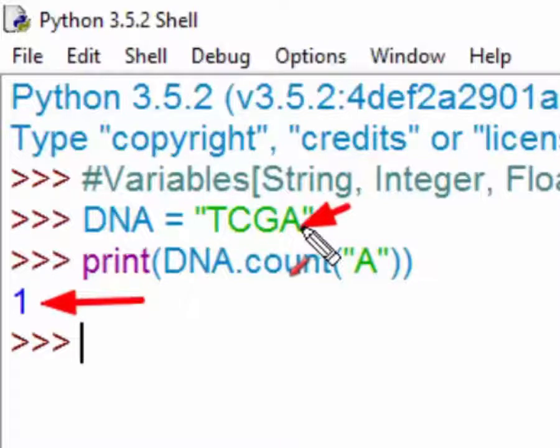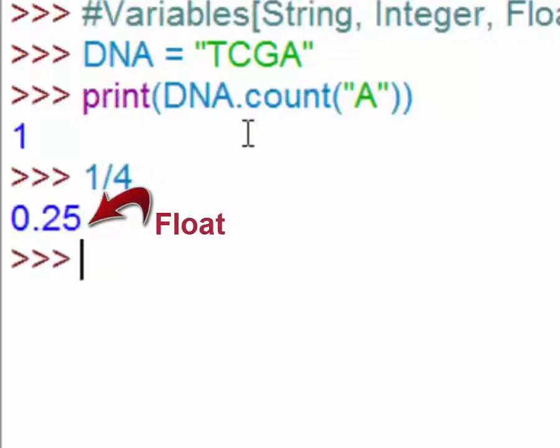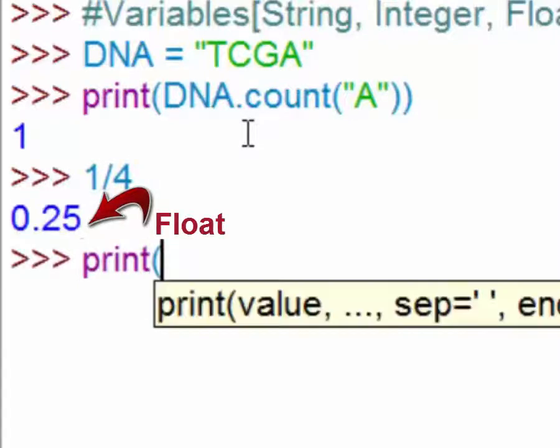The adenine is right here in the text. A float variable contains a number with decimal places. For example, if we say 1/4, which is the number of adenins divided by the total number of nucleotides shown here, it tells you 0.25.